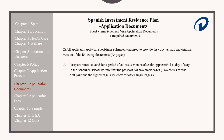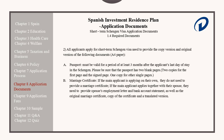A Marriage Certificate. If the applicant is applying on their own, they do not need to provide a marriage certificate. However, if the applicant is applying together with their spouse, they need to provide their spouse's employment letter and bank statement, as well as the original marriage certificate, a copy of the certificate, and a translated version.